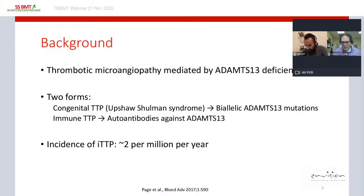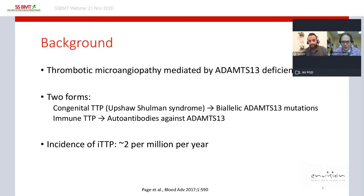By way of background, TTP is a thrombotic microangiopathy mediated by deficiency of the von Willebrand factor cleaving protease ADAMTS13. It occurs in two forms: a congenital form, sometimes called Upshaw-Schulman syndrome, due to biallelic ADAMTS13 mutations. My remarks tonight will focus on the form most commonly seen in adults — immune-mediated TTP due to autoantibodies that either neutralize or cause clearance of ADAMTS13.